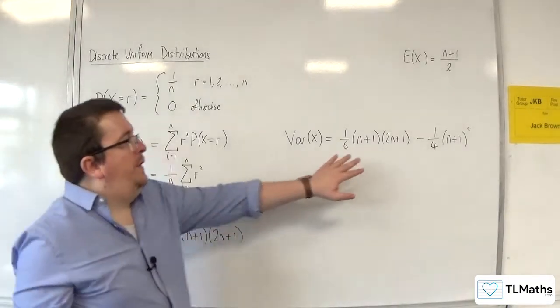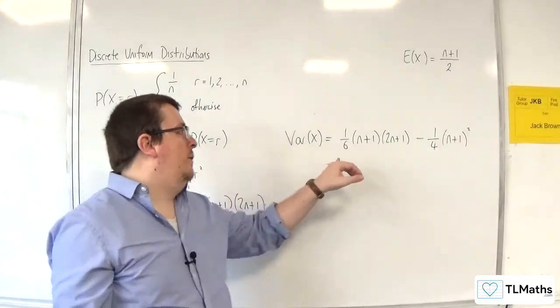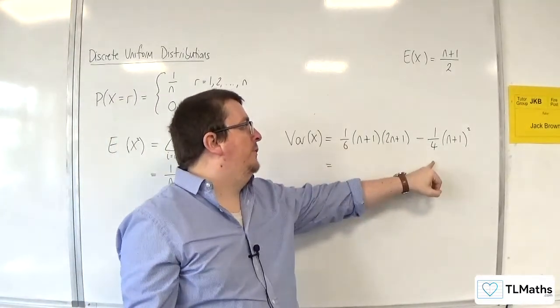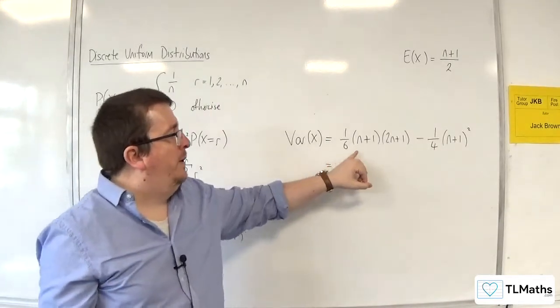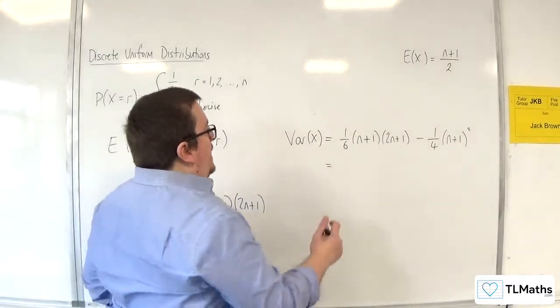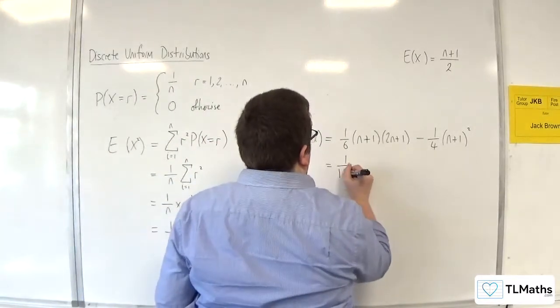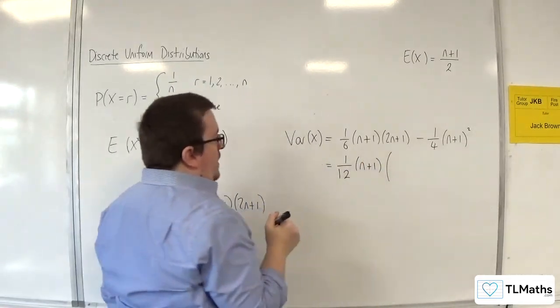Now both of these terms have n plus 1 in common, but I want to pull out the multiplier first. So we've got 1 sixth and 1 quarter. The lowest common multiple of 6 and 4 is going to be 12. So I'll factor out 1 over 12 and an n plus 1. Open up a big bracket.